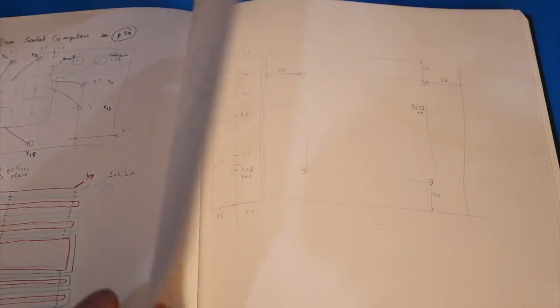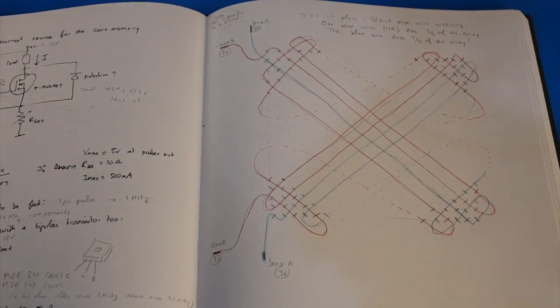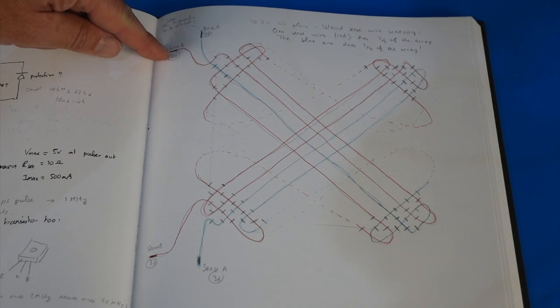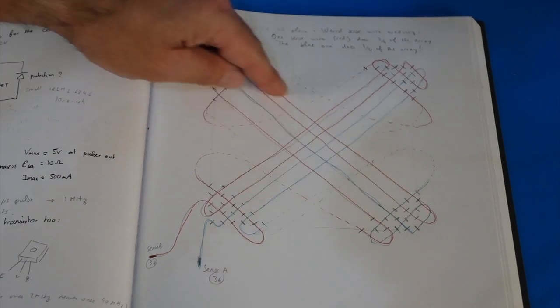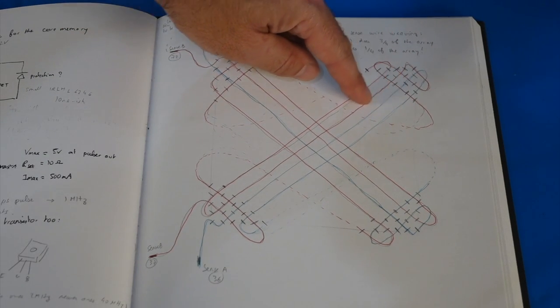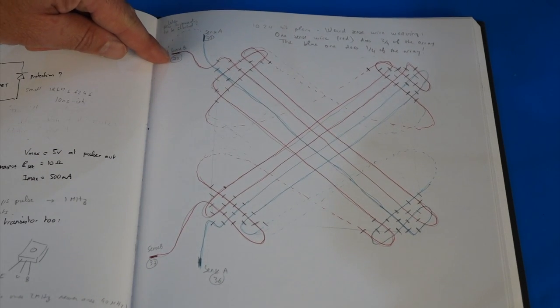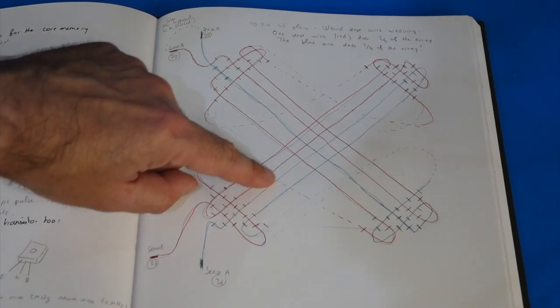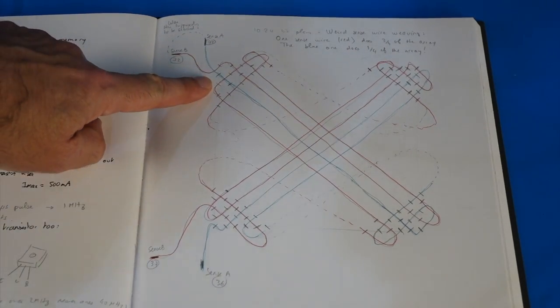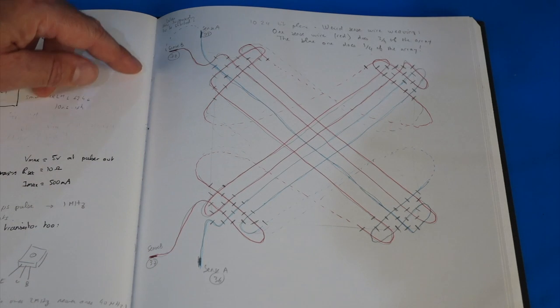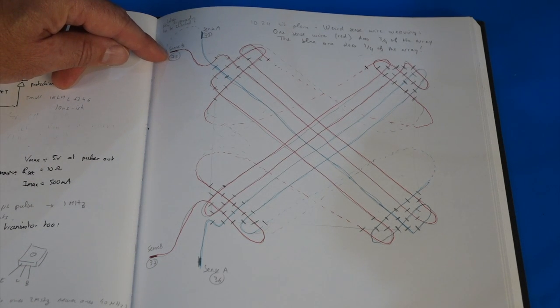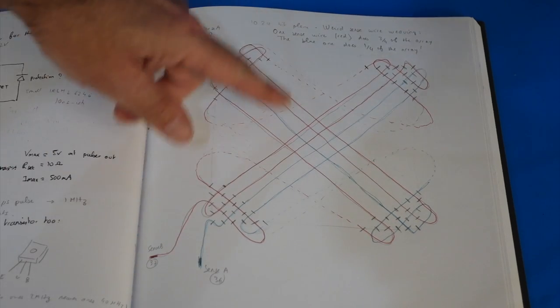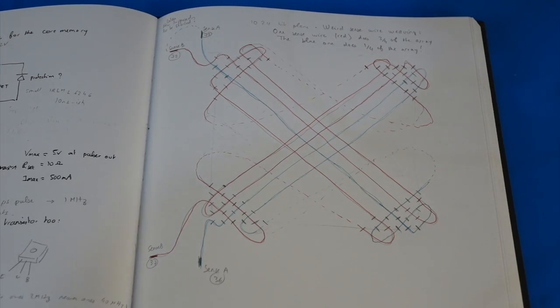The second array is more traditional, it's just one big array here. And on this one it's kind of weird, you have one sense wire that does three quarters of the array. It starts over here, that's the red one, and comes out over here. And you have another one, the blue one, that only does a quarter of the array. And I'm not too sure why they did that. But anyhow, what I ended up doing is completing the turn here, and having those shorted. So I have one wire that does all the sensing in the array.